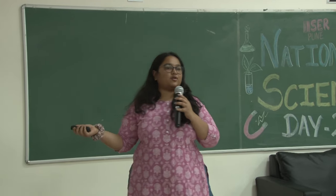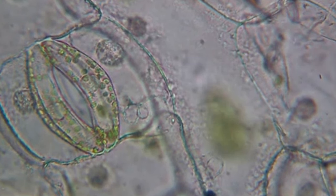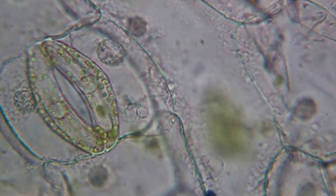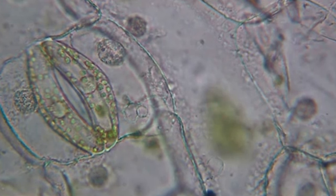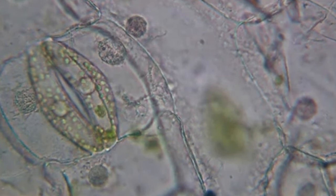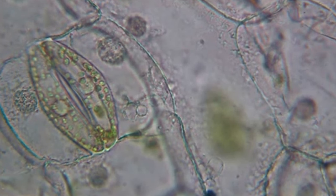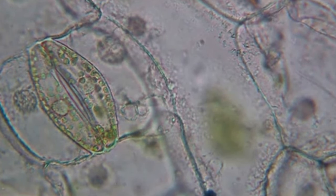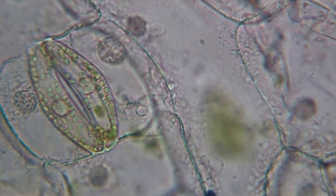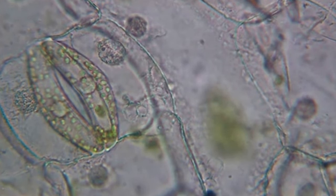This is how the stomata look under a microscope — this is the leaf tissue, and you have the stomata. They do look exactly like the diagram — and the diagram was made after looking at this, so they should look the same. These are the guard cells, and if you see here, you can see the opening and closing of the guard cells. I'm increasing the speed of the video — can you see the guard cells opening and closing?